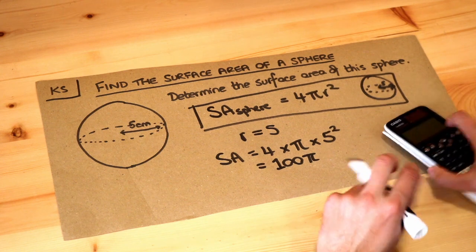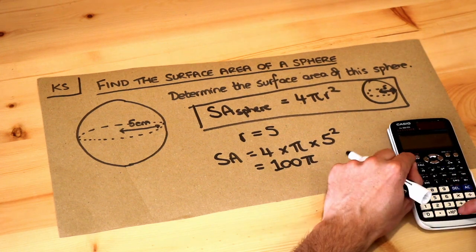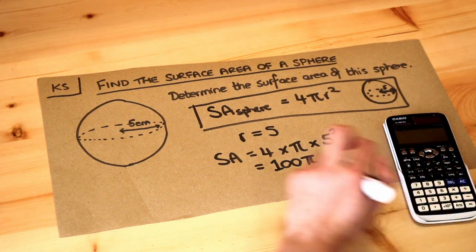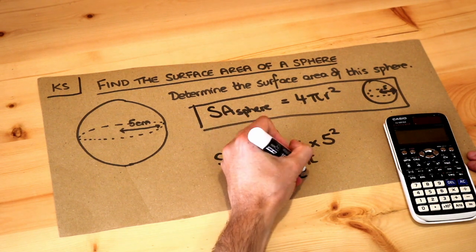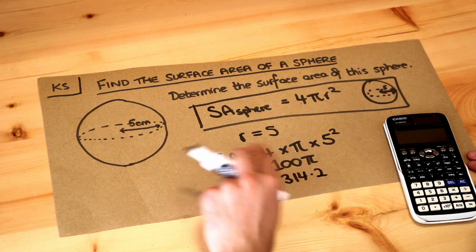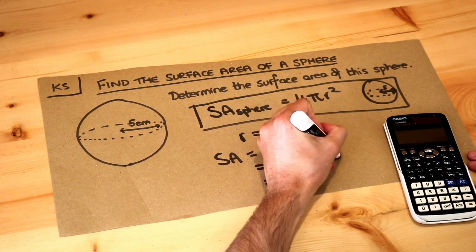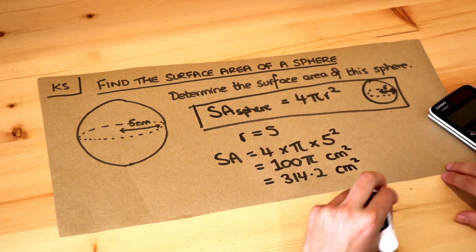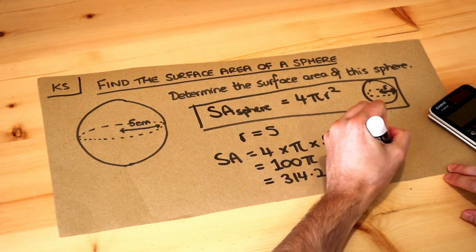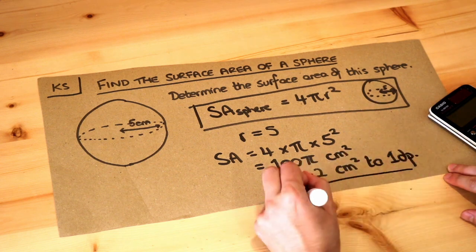But if we want to do that on our calculator, we just write 100π and then press the SD key. As a decimal, that would be 314.2. And what's the unit? It's centimeters squared. It's a surface area, so this would be centimeters squared, and this would be centimeters squared. And that answer was to one decimal place. So that's the final answer.